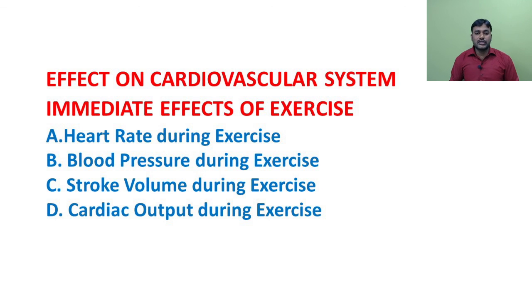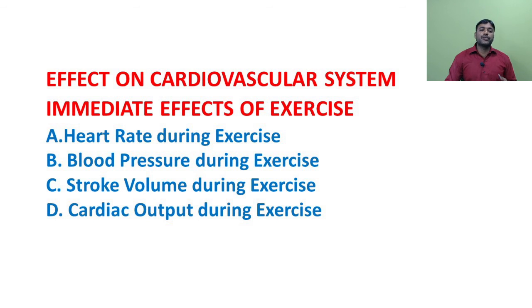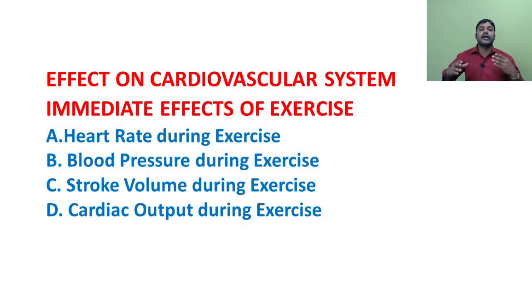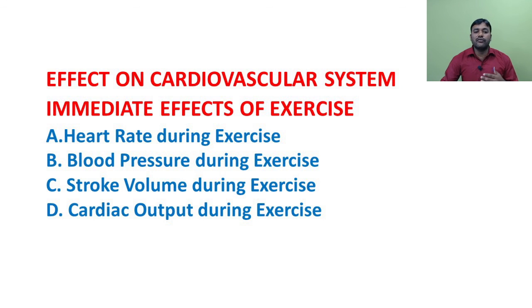The immediate effects on the cardiovascular system include changes in heart rate, blood pressure, stroke volume, and cardiac output. Heart rate increases with the intensity of exercise. The normal heart rate is 72 beats per minute and can rise up to 200 beats per minute. It is also observed that the increase in heart rate is comparatively slower in trained persons. During strenuous exercise, systolic blood pressure increases, whereas diastolic blood pressure changes to a small extent.